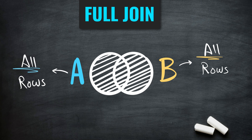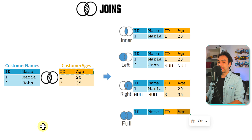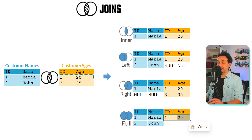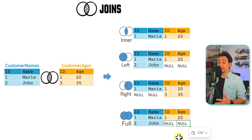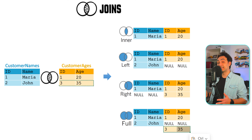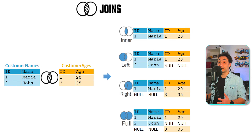Full join means everything from the left and everything from the right without missing anything. We take both customers from the left — customer ID 1 gets a match, customer ID 2 doesn't, so those fields are null. But customer ID 3 from the right side is also included, and since it has no match on the left, those fields are null too. So we have all data from both sides, with nulls where there's no match.